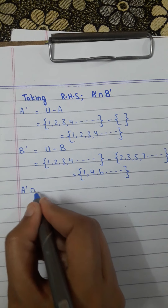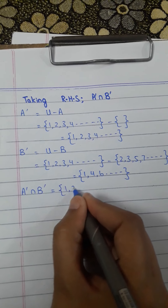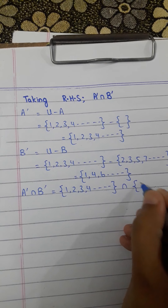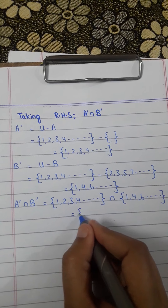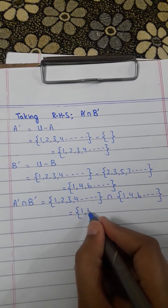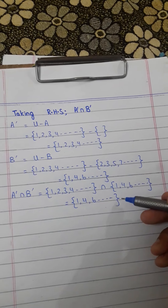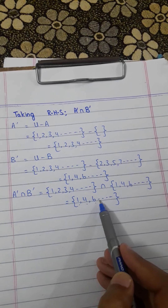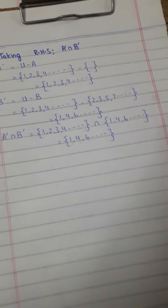Now compute A'∩B'. The answer of A' is {1, 2, 3, 4, ...} and the answer of B' is {1, 4, 6, ...}. The intersection gives all members common to both sets: {1, 4, 6, ...}. The right-hand side answer is {1, 4, 6, ...} and the left-hand side answer is also {1, 4, 6, ...}.